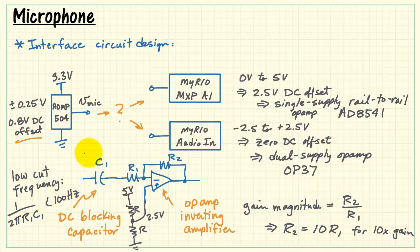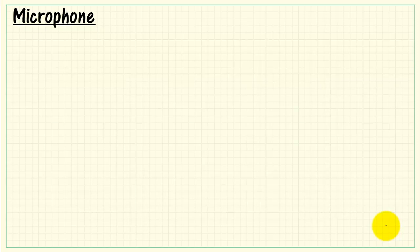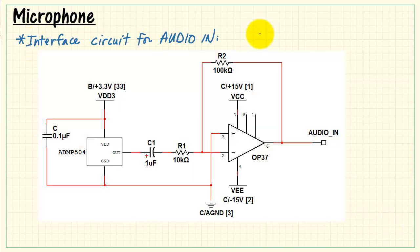Now, putting together all of these various design equations, looks like 1 microfarad, 10k, and 100k solves the constraints that we need. 10k works nicely for the equal-valued resistors in the voltage divider.